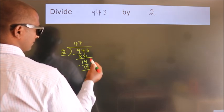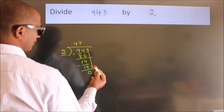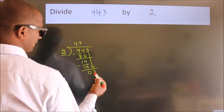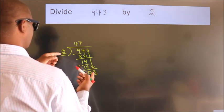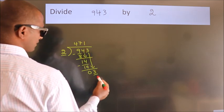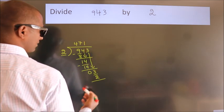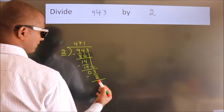After this, bring down the beside number. So, 3 down. So, 3. A number close to 3 in the 2 table is 2 1s 2. Now, we subtract. We get 1.